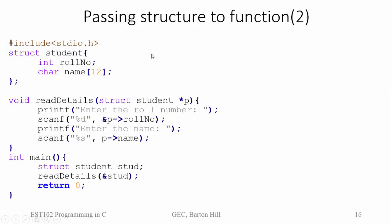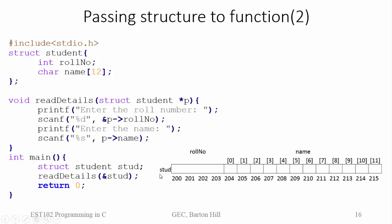In the second method we are passing the structure parameter using pass by reference. The same example is considered: we have a structure student, a function 'read_details' for reading student details, and a main function. The structure variable stud is created and memory is allocated. We then call read_details and pass the address of stud, for example address 200.